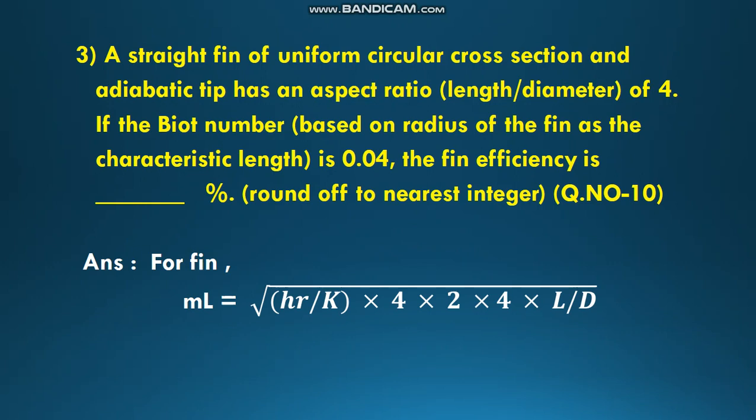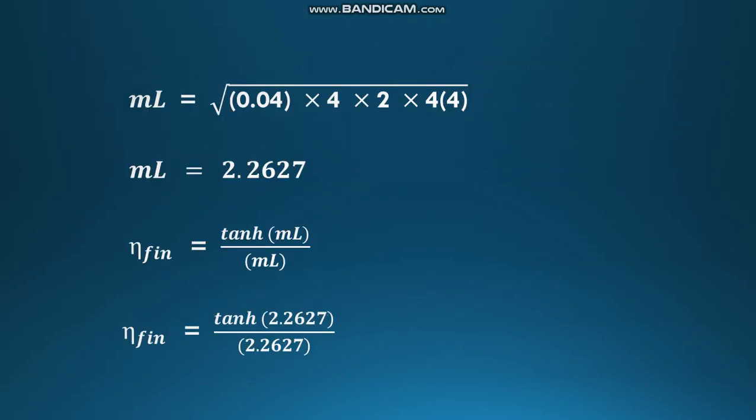It has an aspect ratio of 4 and Biot number is 0.04. Simply by using the equation for the fin, mL = √[(hr/k) × 4 × 2 × 4 × L/D] because it's mentioned uniform circular cross section. We evaluate mL = √[0.04 × 4 × 2 × 4 × 4] and we get mL equals 2.2627.